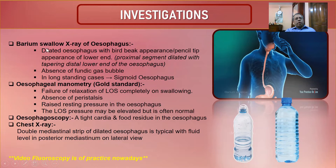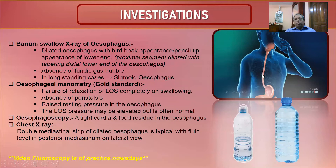On barium swallow, there is a dilated esophagus with a 'bird beak' or 'pencil tip' appearance — the proximal segment is dilated with tapering of the distal esophagus. The outline is smooth — distinguishing it from malignant lesions which have an irregular outline. Absence of the fundic gas bubble is also noted on the plain X-ray.